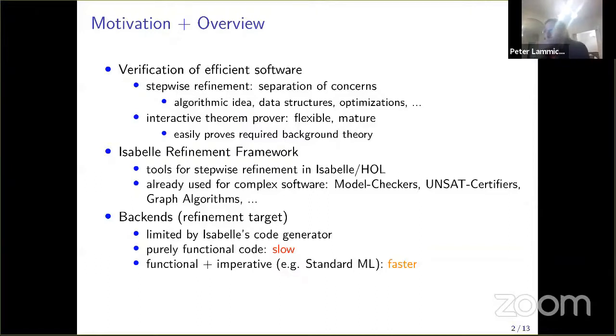With purely functional code, we will never get into the reach of what we can do with C or C++. So we used imperative HOL, which supports code generation to a functional programming language with imperative features. For example, standard ML has built-in arrays. With this approach, we are already faster.